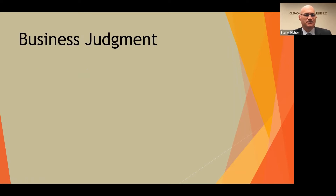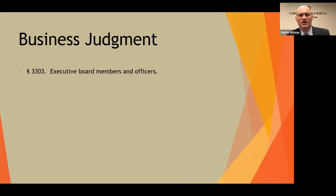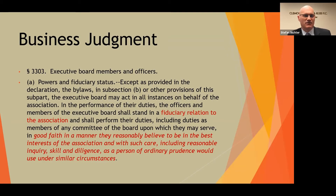The standard for associations under the Uniform Condominium or Uniform Planned Community Act is set forth in section 3-303 of the Uniform Condominium Act — or for the sister statute, the Uniform Planned Community Act, it would be section 5-303. Essentially, it uses the word fiduciary relation to the association, and as a member of the board you must perform your function in good faith, in a manner you reasonably believe to be in the best interest of the association, and with such care including reasonable inquiry, skill, and diligence as a person of ordinary prudence would use under similar circumstances.